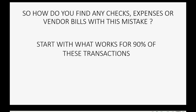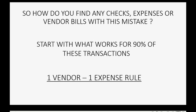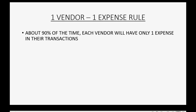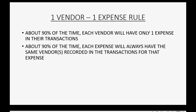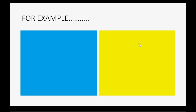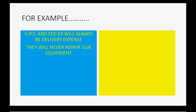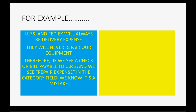So how do you find any checks, expenses, or vendor bills with this mistake? We start with what works for 90% of these transactions — it's called the one vendor, one expense rule. This rule asserts that about 90% of the time each vendor will have only one expense in their transactions. For example, UPS and FedEx will always be delivery expense — they will never repair our equipment. Therefore if we see a check or bill payable to UPS with repair expense in the category field, we know it's a mistake.